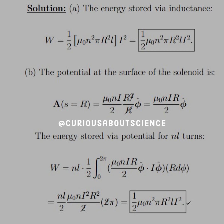Okay, so the solution says that for A, the energy stored via the inductance, our simplest way to calculate it, well, we just plug in L for the inductance, and we see that we get one half mu naught N squared pi R squared L I squared. Alright, we're going to be referencing this result all day.